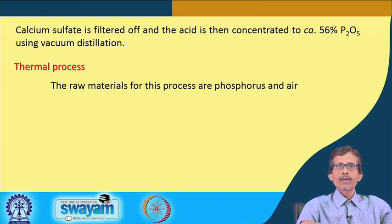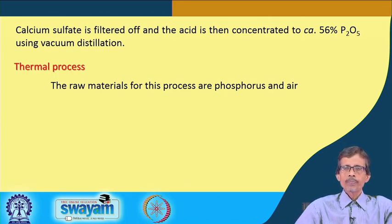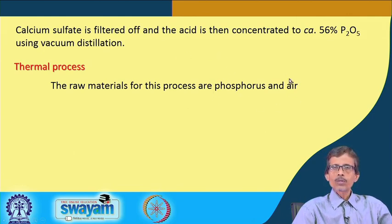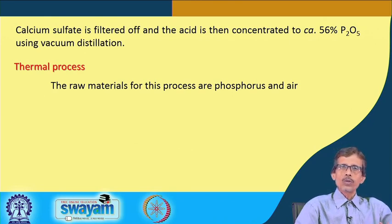We can utilize the elemental phosphorus route. That particular industry gives us production of phosphorus from the rock sample. Phosphorus has its own utilizations, and making phosphorus from the rock is also another industrial aspect. Along with that, the phosphorus can be utilized for making phosphoric acid. We simply burn phosphorus with plenty of O2 from air to make P2O5. Burning it gives us phosphorus pentoxide.